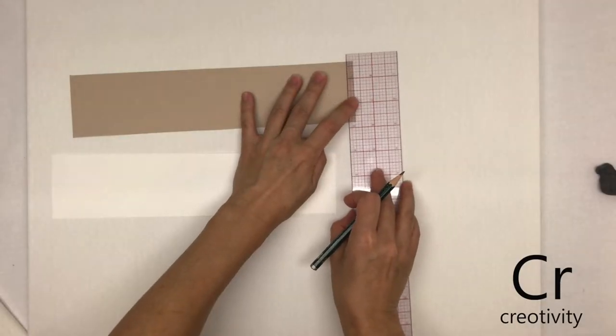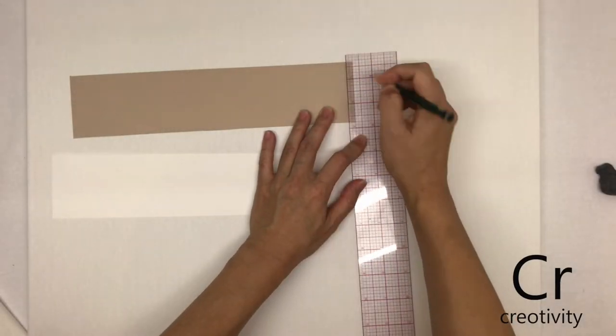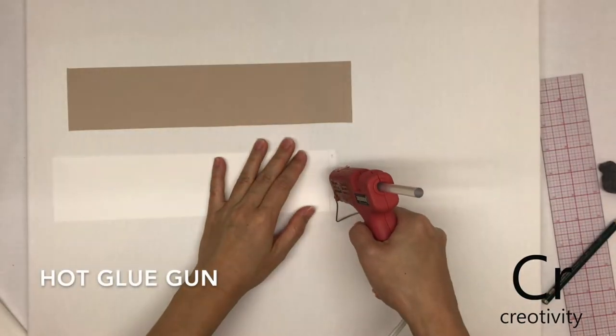Add a quarter-inch seam along the edge and then glue them together.